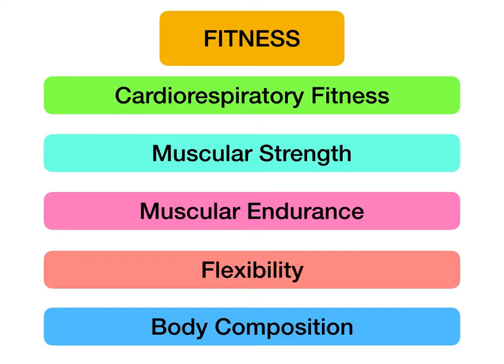Muscular strength is your ability to move a large load or exert a lot of force over a short period of time. Muscular endurance, on the other hand, is the ability to move somewhat of a load but over a longer period of time. Flexibility is our muscles' and joints' ability to move and bend throughout the range of motion. And finally, body composition is the relative amount of muscles, fat, and structural components within our bodies.